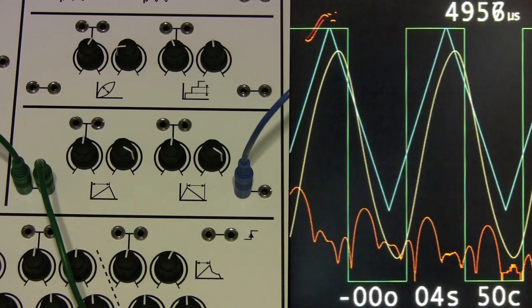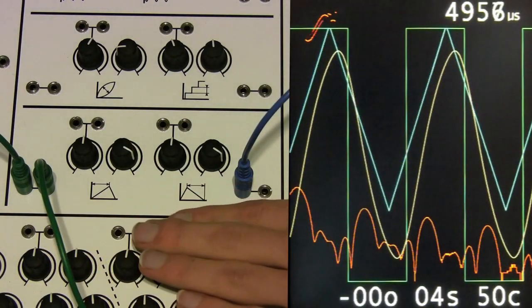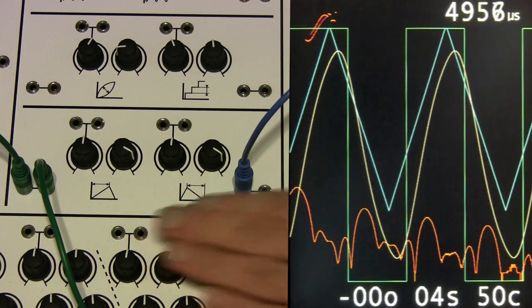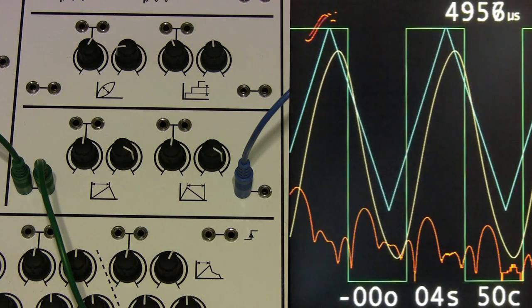On the oscilloscope and in the audio here, we have a slew rate limiter working on a square wave in contrast to a filter. The filter produces a rounded sine wave result, whereas the slew rate limiter is producing a triangle wave.